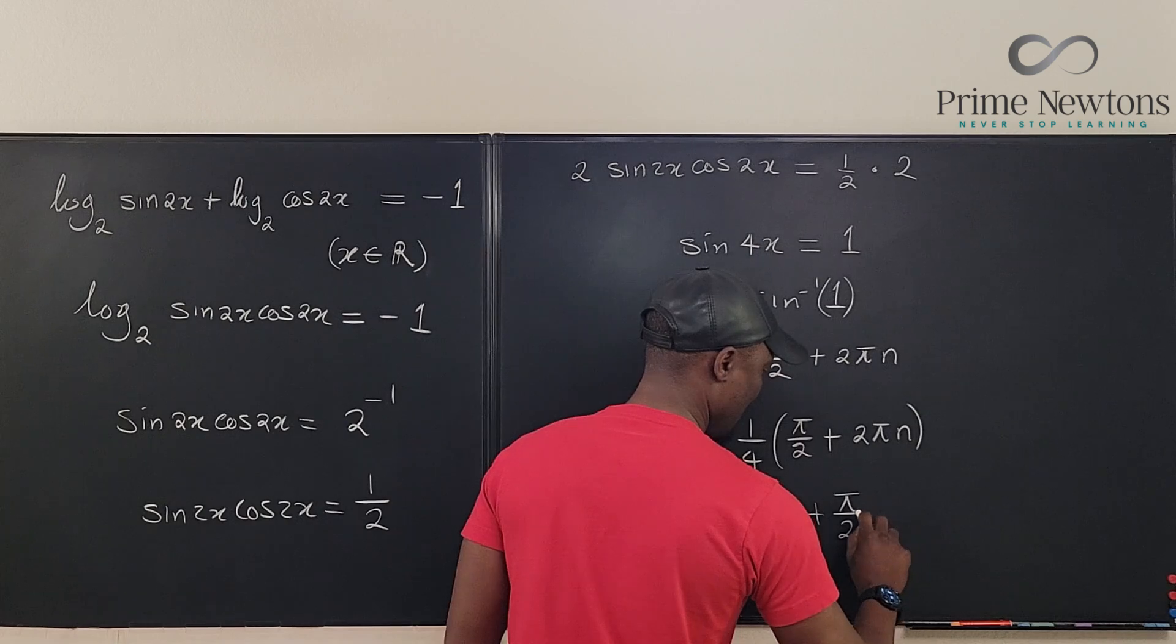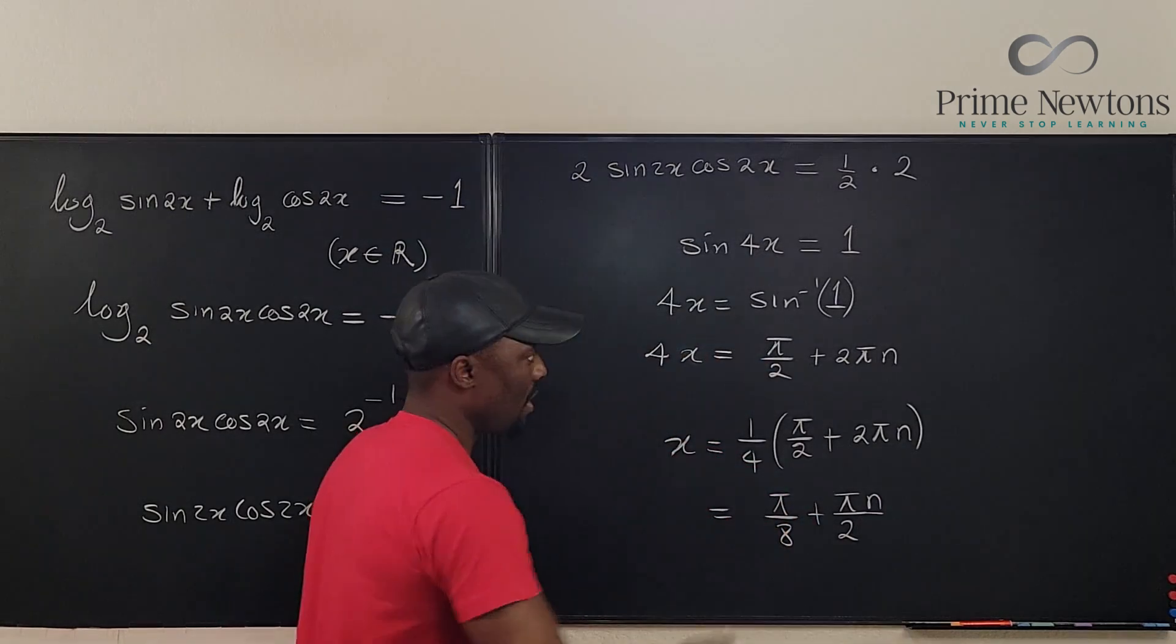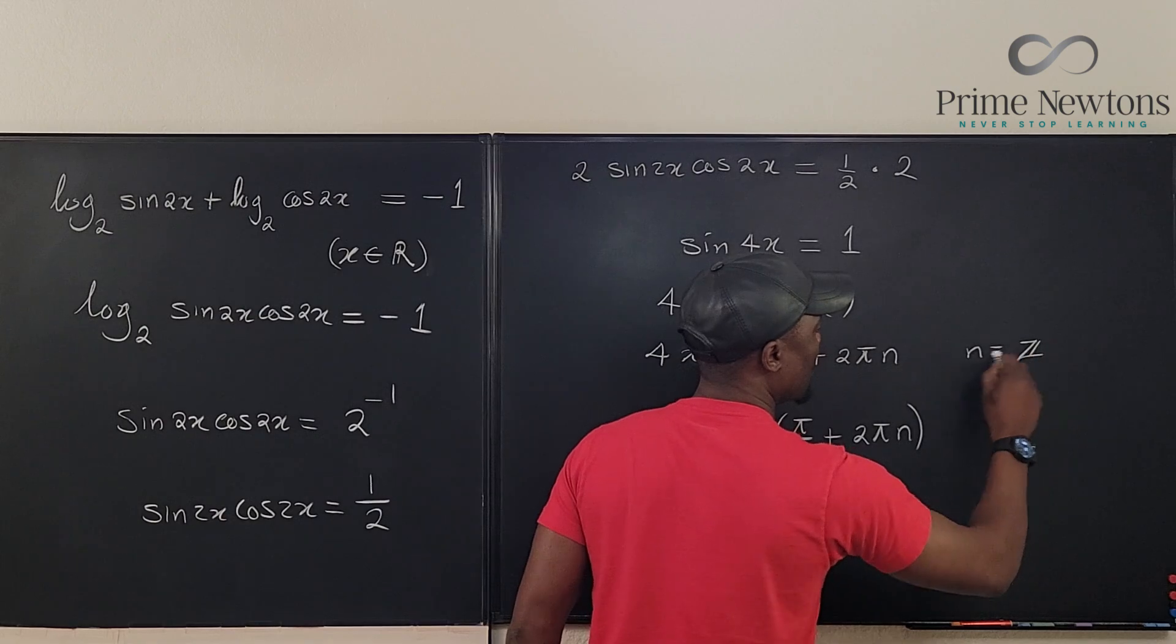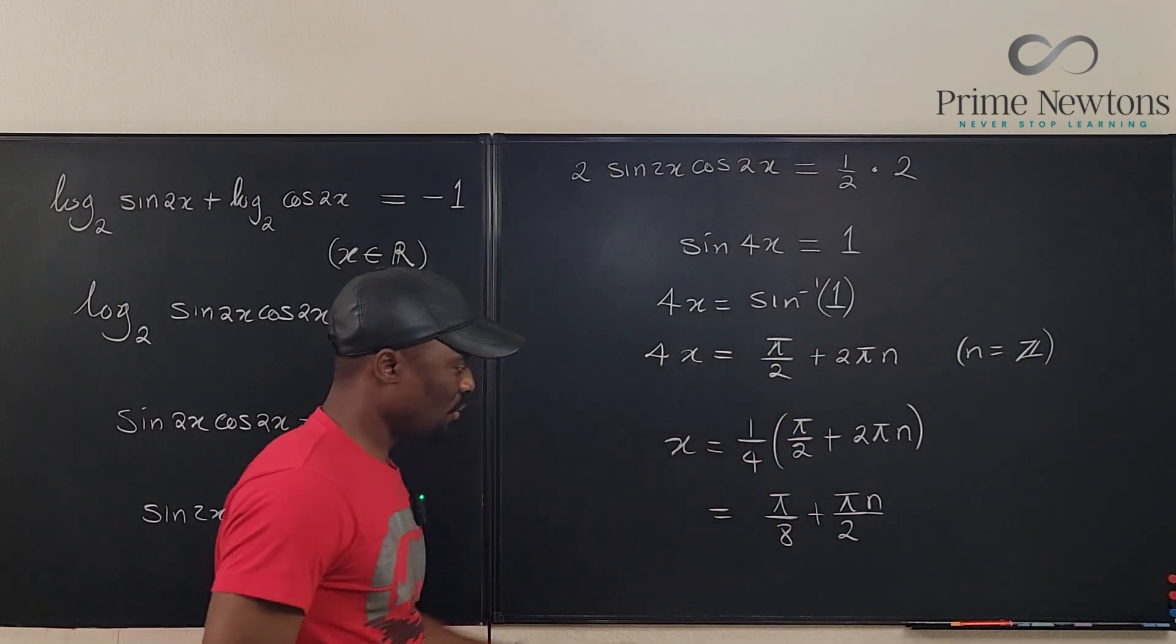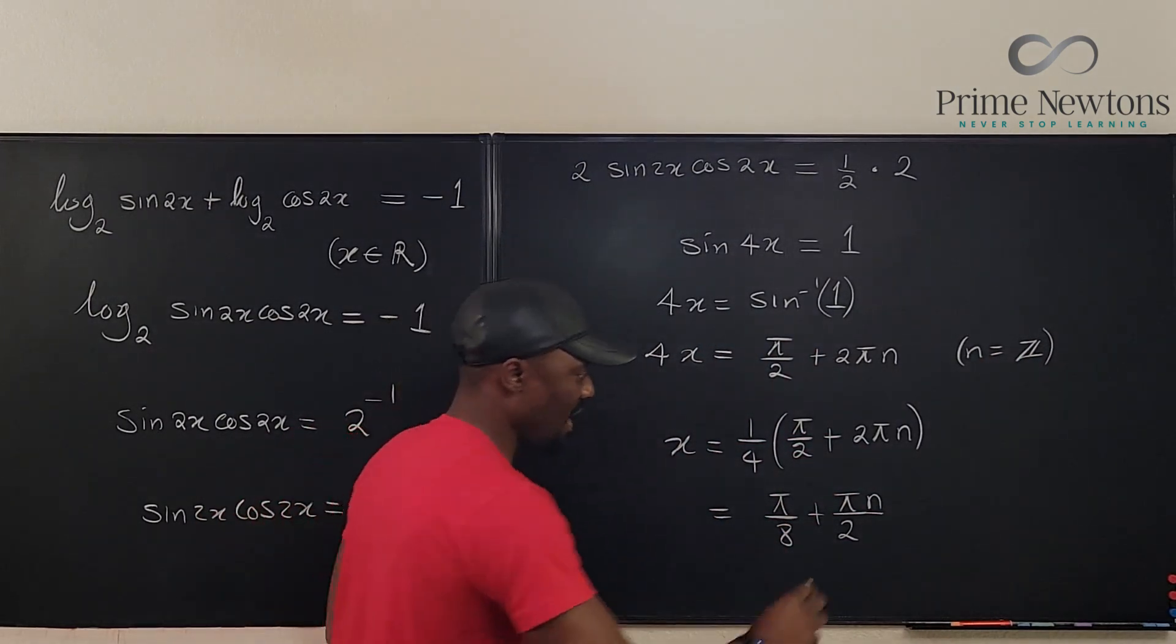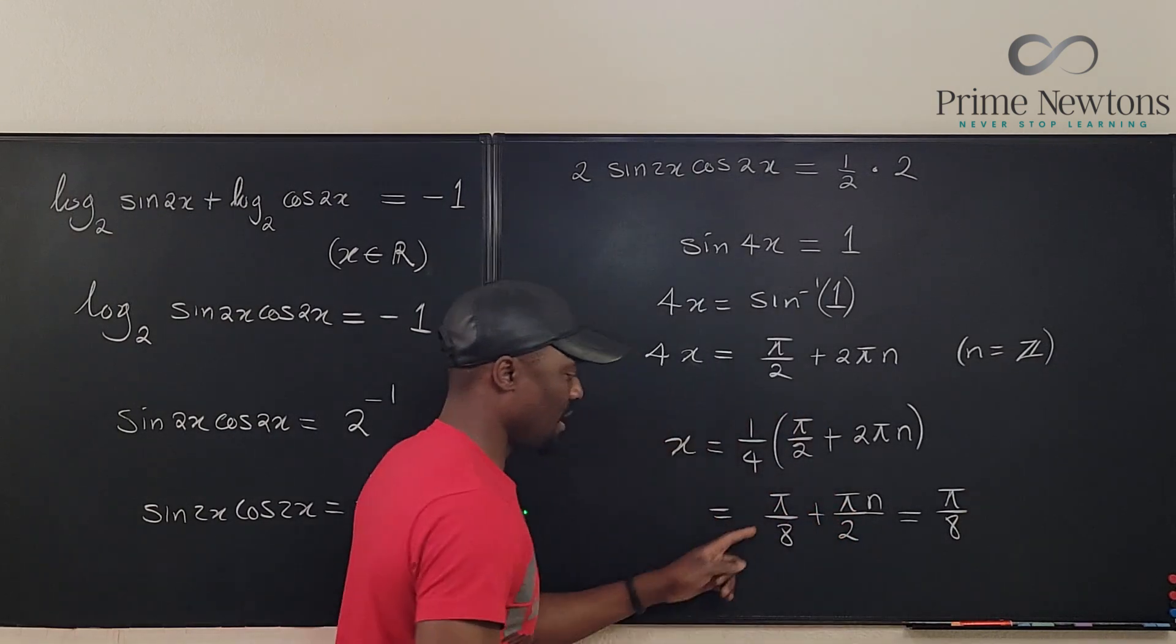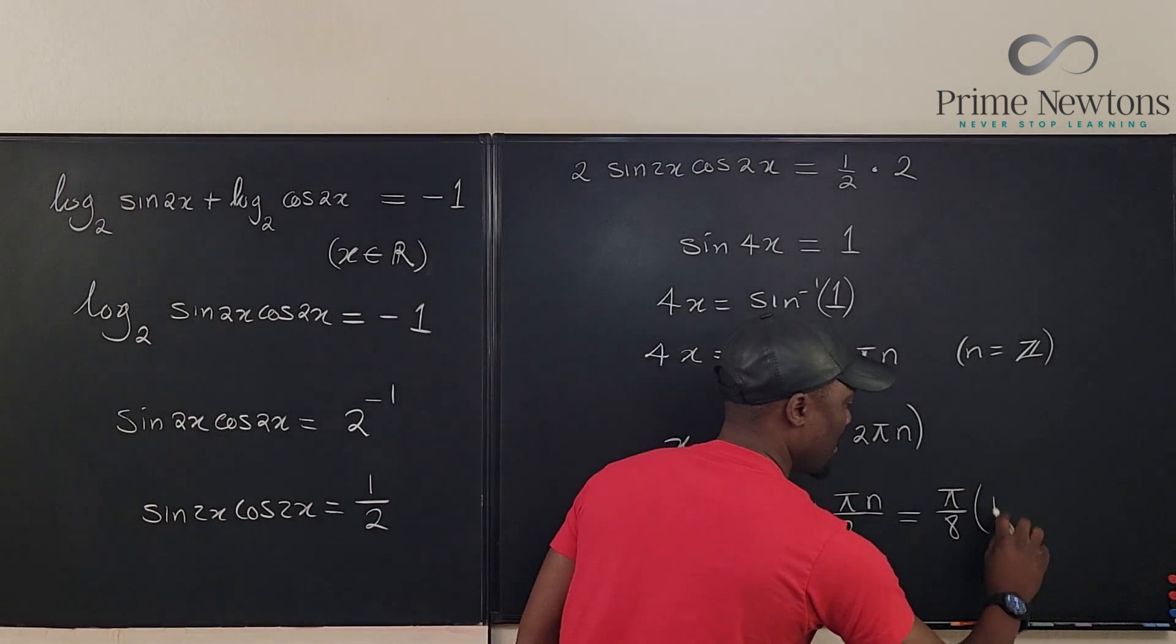Well, this doesn't look beautiful. Here n is in the set of integers, so if I factor out π over 8, I'm going to end up with π over 8 times 1 plus 4n.